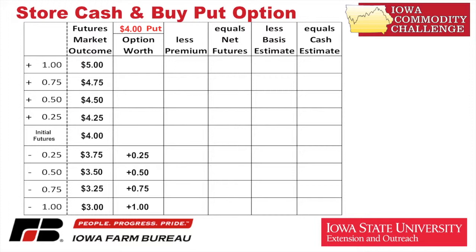That's the option worth all by itself. If the option expires when futures prices are right at the four-dollar strike price, that option is basically worthless — not worth anything because the market is already at four dollars at expiration. Where options get interesting is on the upside — I can't lose anything beyond the premium on a purchased put option. If the market goes to $4.25, the right to sell at four dollars is worthless because I can sell at $4.25. All the way up to five dollars, I'll let the market go there, walk away from the option, and enjoy that five-dollar futures price for my sold commodity.